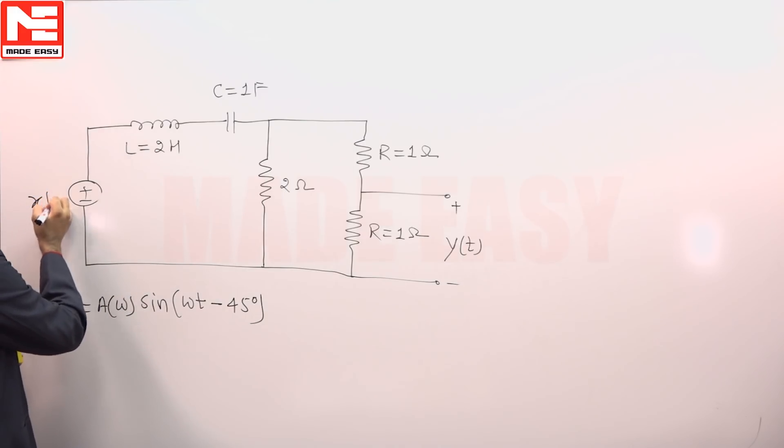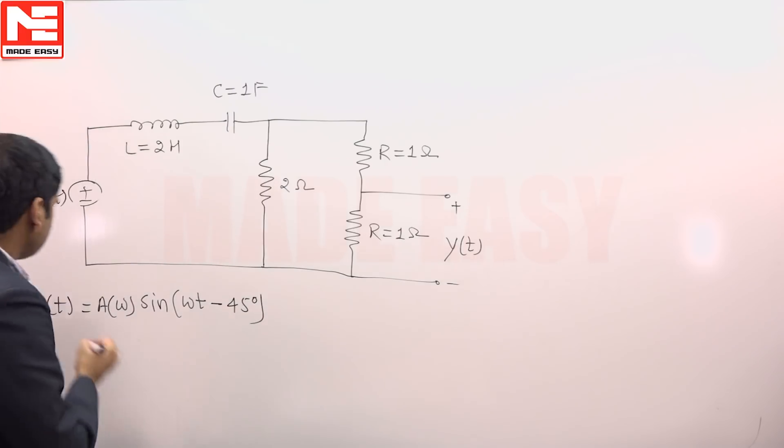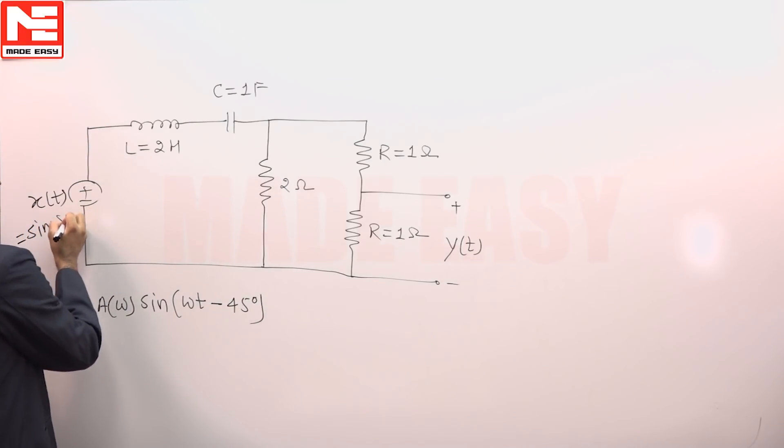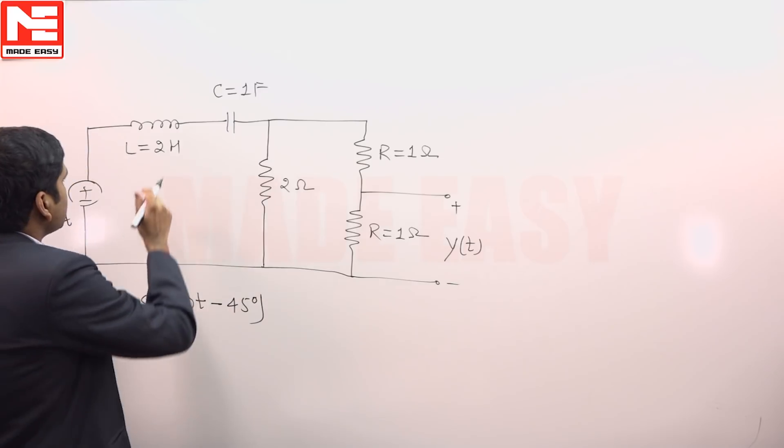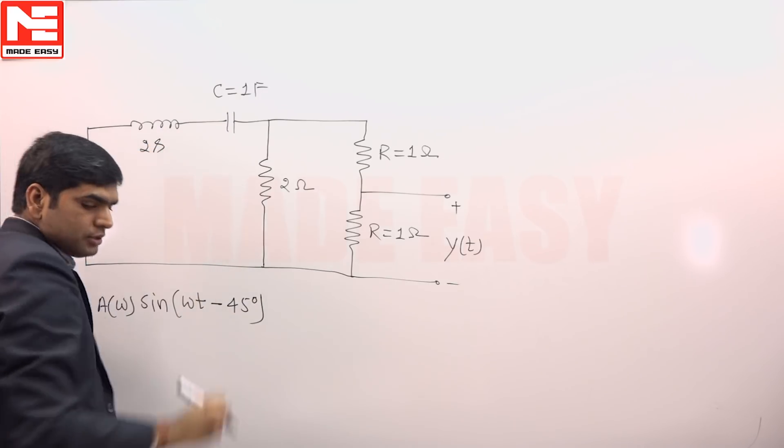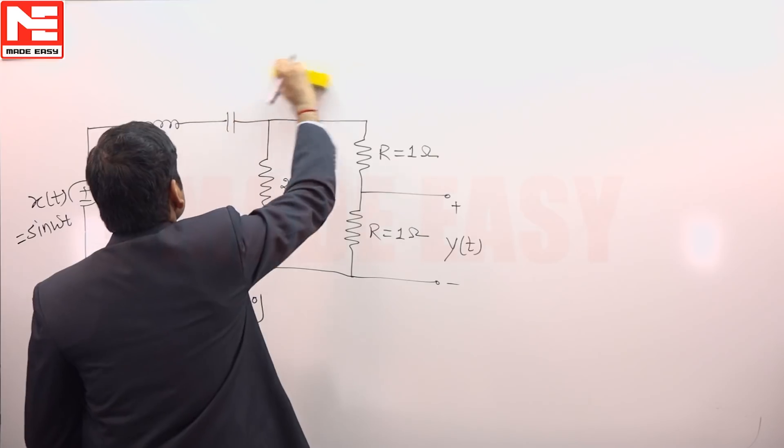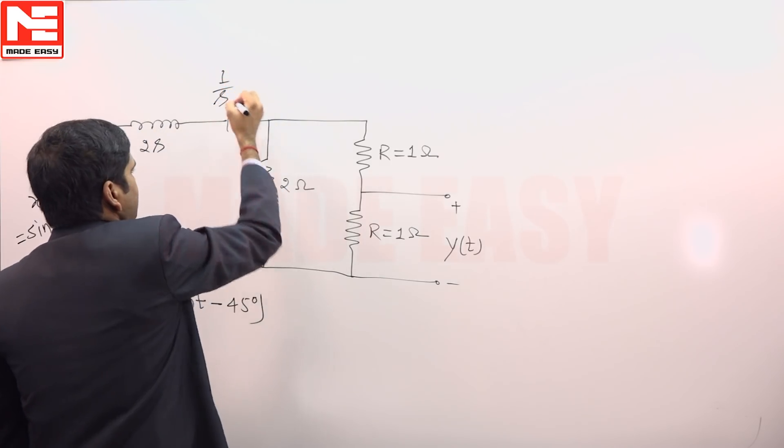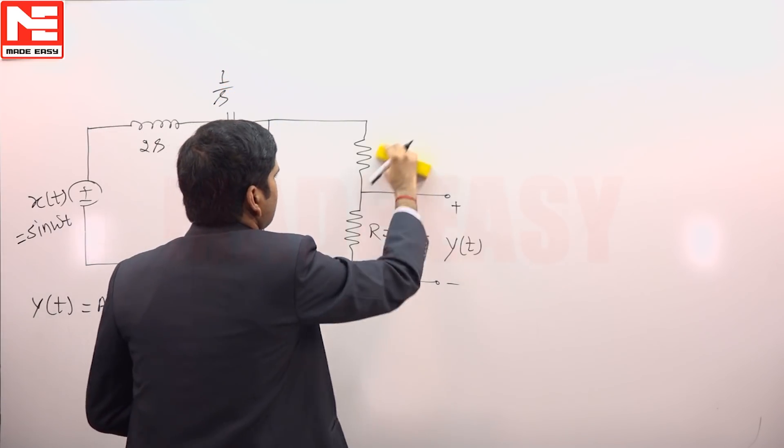Let us assume that x(t) = sin(ωt). This x(t) will get converted into 2s, this will get converted into 1/s, these will remain 2, 1 like this.